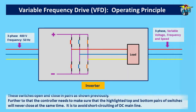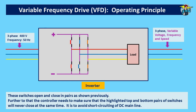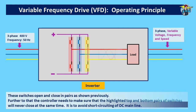These switches open and close in pairs as shown previously. Further to that, the controller needs to make sure that the highlighted top and bottom pairs of switches will never close at the same time, in order to avoid short circuiting of the DC main line.